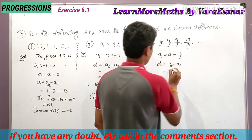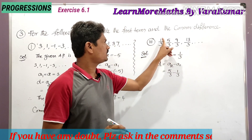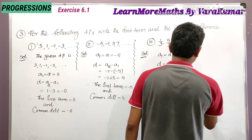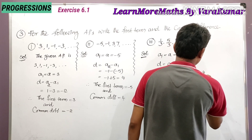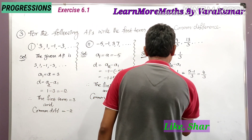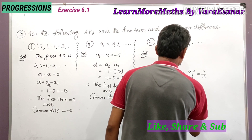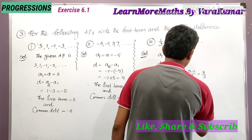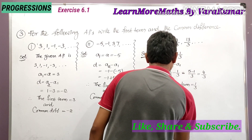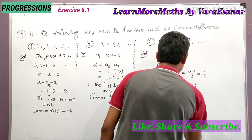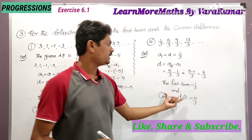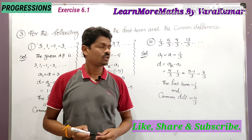So a₂ minus a₁ is 5/3 minus 1/3. Finding the LCM, we get (5 minus 1) by 3, which is 4/3. Therefore the first term is 1/3 and the common difference is equal to 4/3.